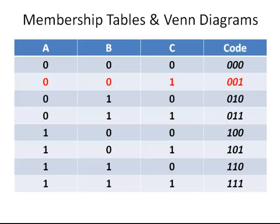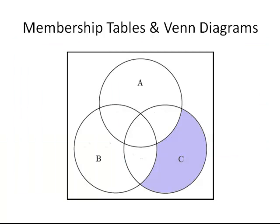The next one is the 0, 0, 1 region and this is part of C only. It is not part of the A region, it is not part of the B region, but it is part of the C region. So where we have C on its own — that region there that is shaded in — that is the 0, 0, 1 region.